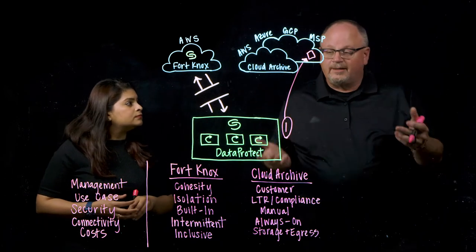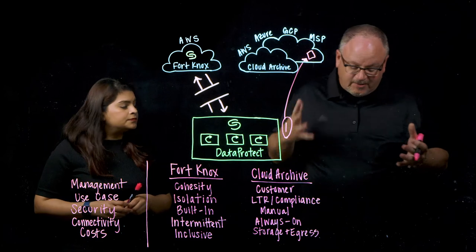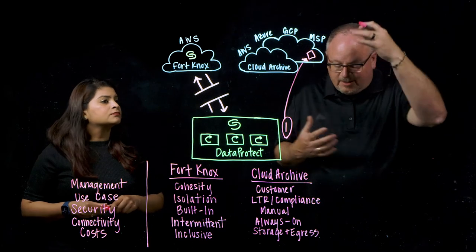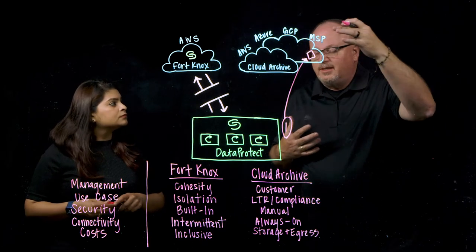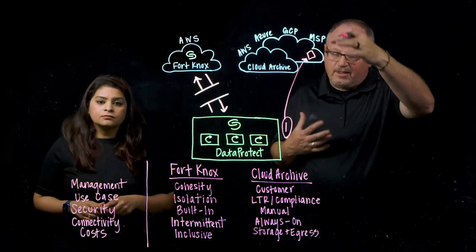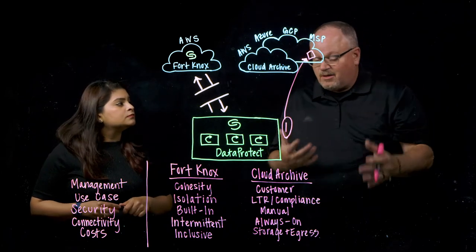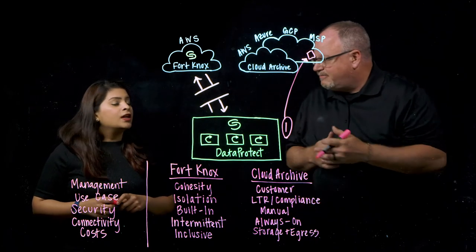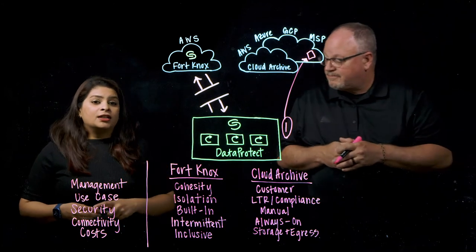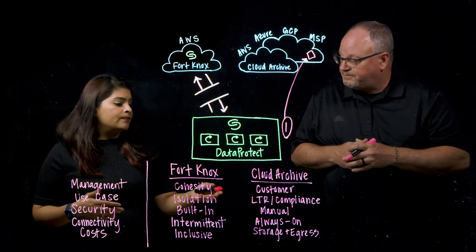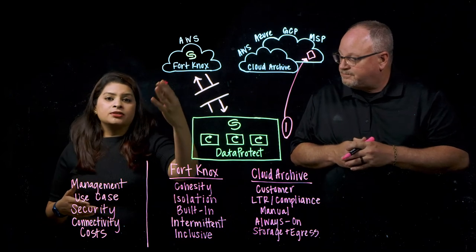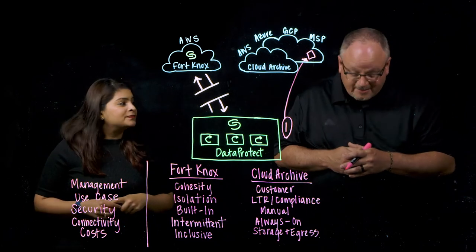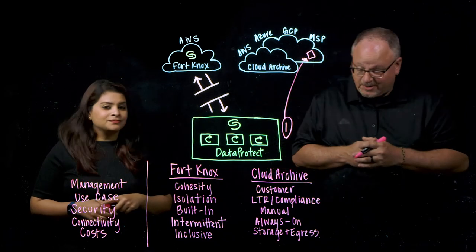Let's take a look at how these are actually deployed in the cloud and the differences in cost and ease of use. With Cloud Archive, the customer is responsible for the cost involved in managing and deploying their cloud storage buckets, which incurs costs on both a storage and an egress standpoint. That's the best part about Fort Knox — customers can completely avoid storage and egress costs because it's all built into the Fort Knox SaaS subscription, so they save some money there.